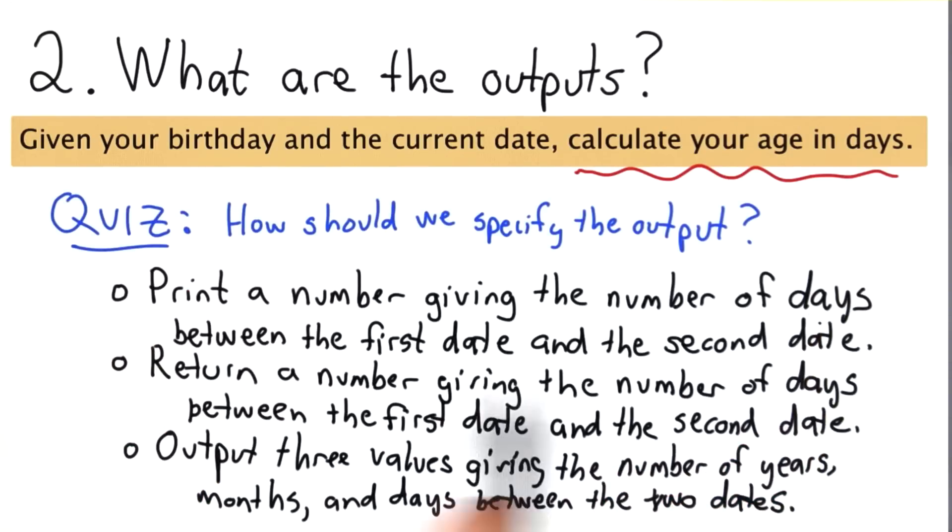The choices are: print a number giving the number of days between the first date and the second date; return a number giving the number of days between the first date and the second date; or output three values giving the number of years, months, and days between the two input dates. Select the one you think is best.